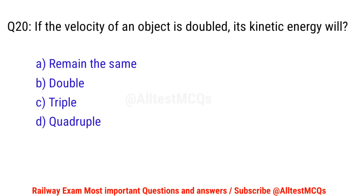Q20. If the velocity of an object is doubled, its kinetic energy will — the right option is D. Quadruple.